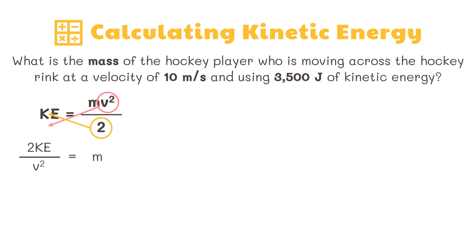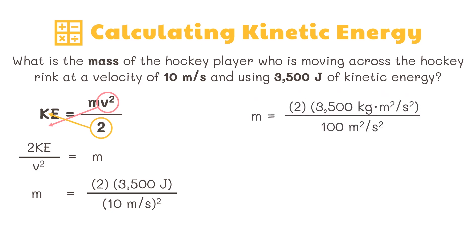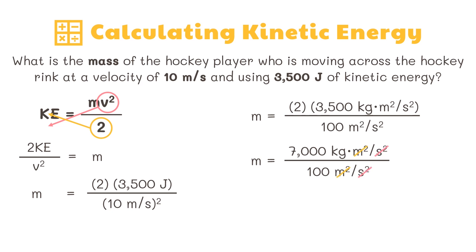Using the derived formula, let's substitute the given figures from the problem. We get 2 multiplied by 3,500 joules divided by the square of 10 meters per second. A joule is equal to kilogram meter squared per second squared, and the square of 10 meters per second is equal to 100 meters squared per second squared. We can now cancel out common units, leaving the kilogram unit. Dividing 7,000 kilograms by 100, the hockey player has a mass of 70 kilograms.